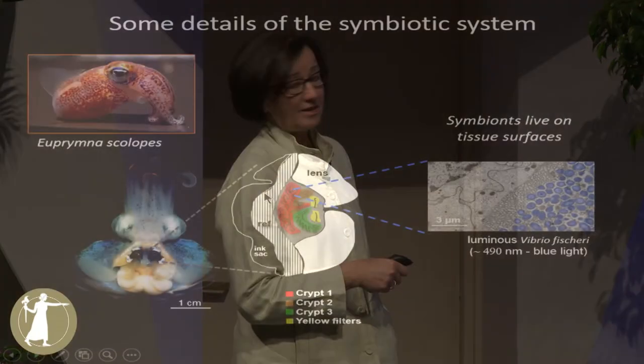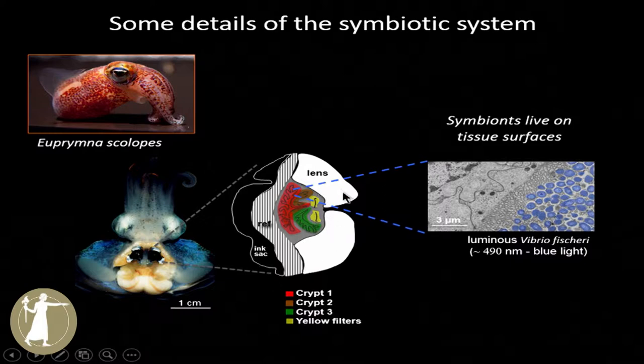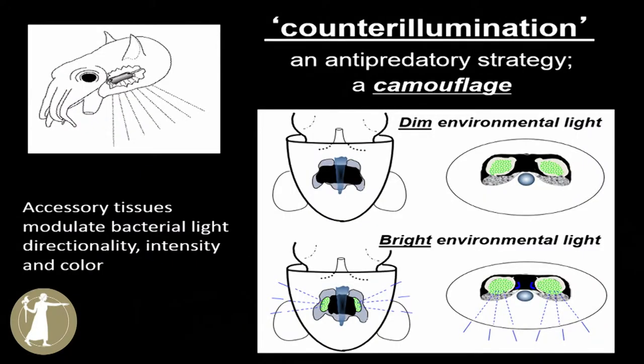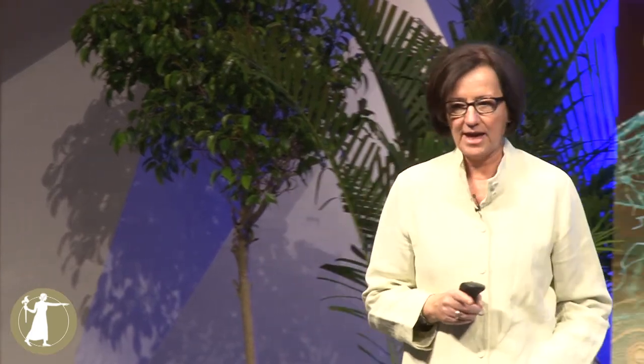These bacteria are luminous, and the animal uses the bacteria in its behavior. In order for the animal to use the light produced by the bacteria, it has a series of accessory tissues that surround this and modify the light produced. The animal uses the light for a very common behavior in marine environments called counter-illumination — an anti-predatory strategy in which the animal camouflages by matching the color, angular distribution, and intensity of downwelling moonlight and starlight so that it does not cast a shadow against the visual field of a predator looking up from below. It's like a Klingon cloaking device — a very effective camouflage against predation.